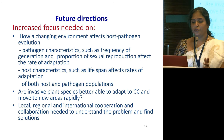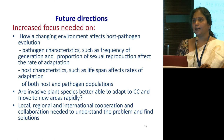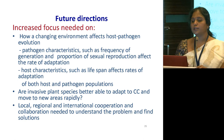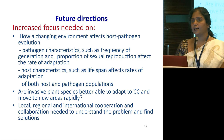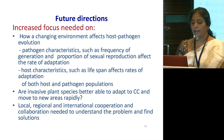For future directions: increased focus is needed on how a changing environment affects host-pathogen evolution, especially when CO2 is increasing in combination with temperature — those studies are very limited. We must determine whether invasive plant species are better able to adapt to climate change and move to new areas rapidly. As in the CSIRO example in Australia, each country should have their own studies to find out which areas will become hot spots for troublesome weeds, pests and pathogens. Local, regional and international cooperation and collaboration are needed to understand the problem and find solutions.